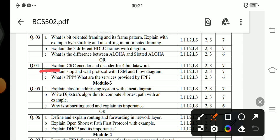Question number 4a: Explain the CRC encoder and decoder with a 4-bit data word. 4b: Explain Stop and Wait protocol with FSM and flow diagram. Question number 4c: What is PPP? What are the services provided by PPP?